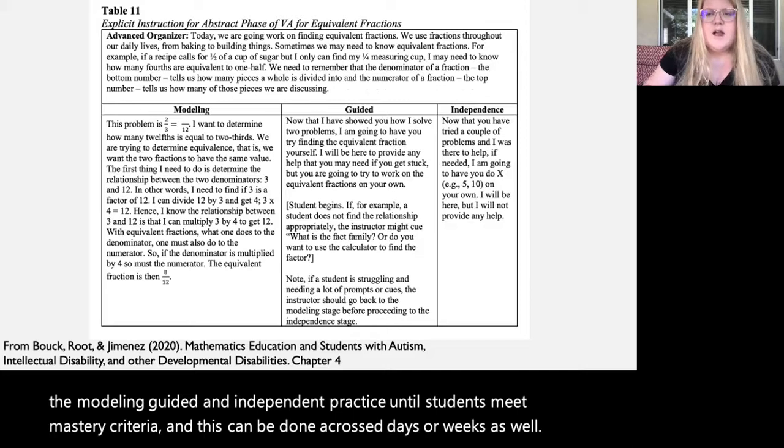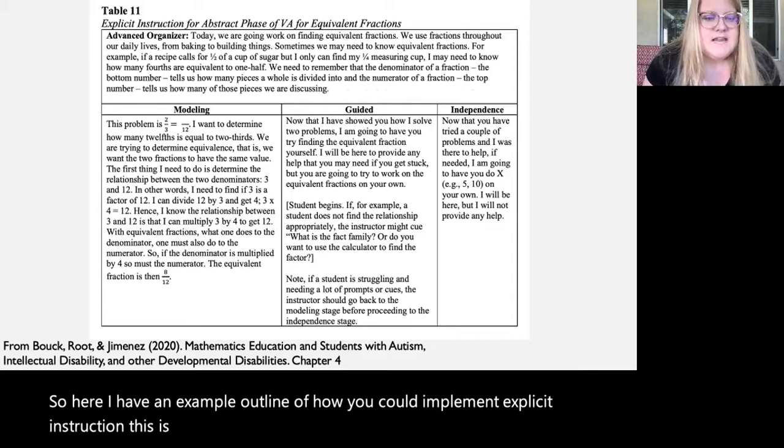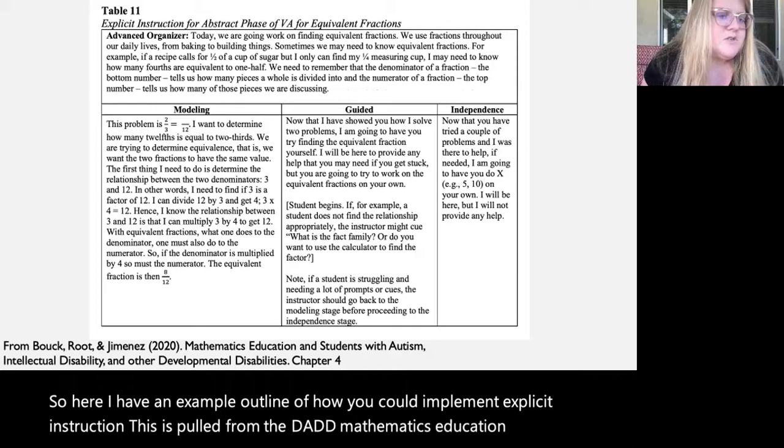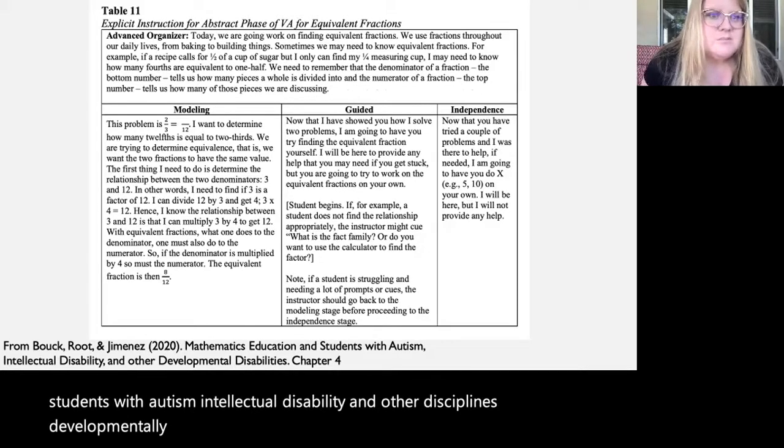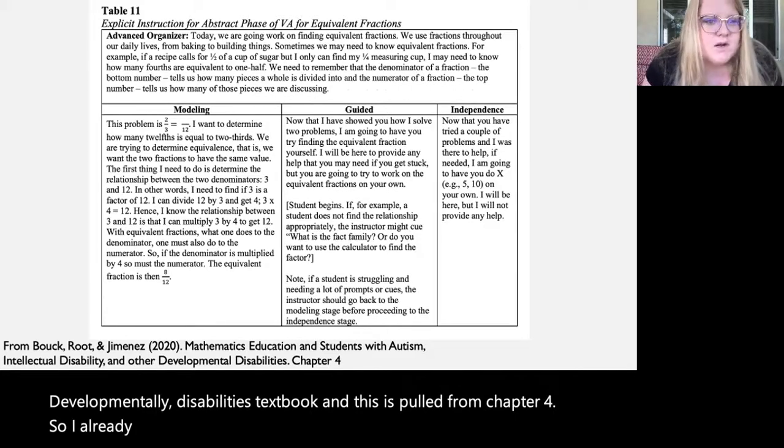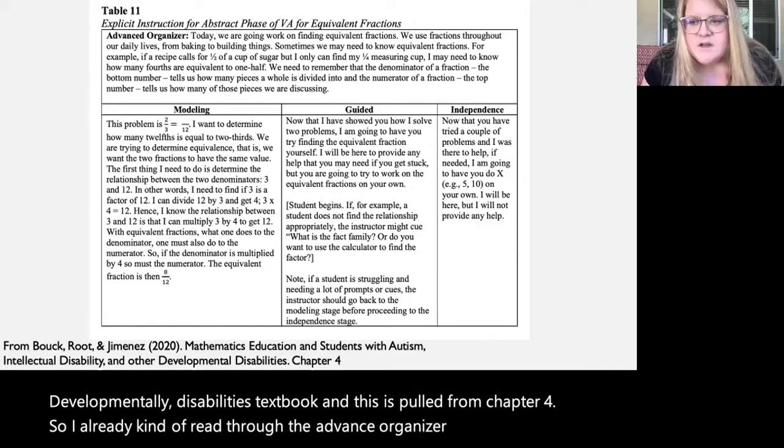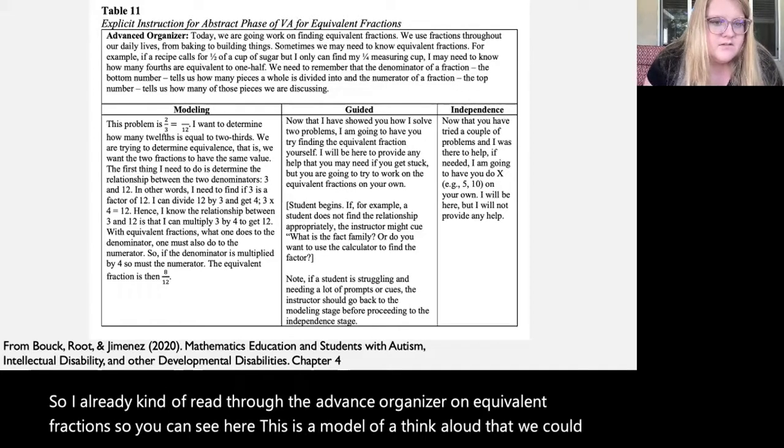So here I have an example outline of how you could implement explicit instruction. This is pulled from the DADD mathematics education and students with autism, intellectual disability, and other developmental disabilities textbook. And this is pulled from chapter four. So I already kind of read through the advanced organizer on equivalent fractions. So you can see here, this is a model of a think aloud that we could use during modeling.